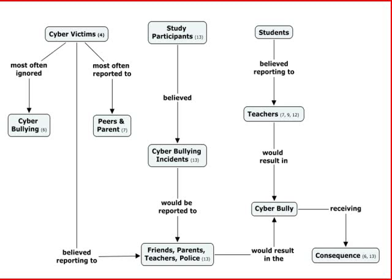It was found that 75% of participants believed that cyberbullies would receive some sort of consequence for their actions if the incidents were reported to friends, parents, teachers, or the police. Relating specifically to students, 83% of them believed teachers could stop cyberbullying when informed. One characteristic of cyberbullying is that it is rarely disclosed. The most commonly used strategy by cybervictims was to ignore the cyberbullying. When cybervictims do report, they do so most often to peers and parents.